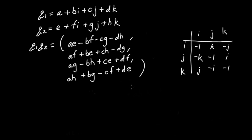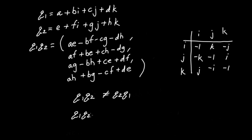It's important to note that quaternion multiplication is in general not commutative — Q1·Q2 ≠ Q2·Q1. That's one of its interesting properties. However, even though the commutative law fails, the associative law remains true: (Q1·Q2)·Q3 = Q1·(Q2·Q3).